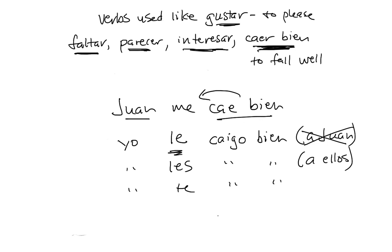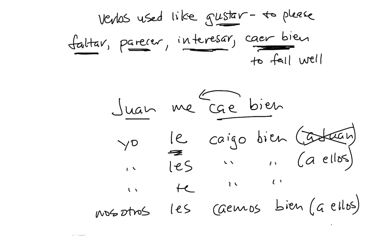How about 'they like us'? That is, we fall well to them. Nosotros becomes the subject: nosotros les caemos bien, a ellos — we fall well to them, they like us. Caer bien is used much more often than gustar when talking about liking people — you're much better off learning this expression. You can also change bien to mal: caer mal means you don't like somebody. For example, Juan me cae mal, or yo le caigo mal if he doesn't like me.